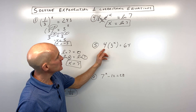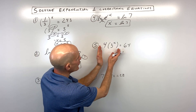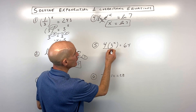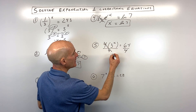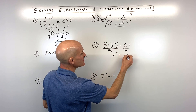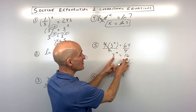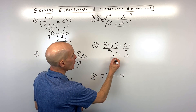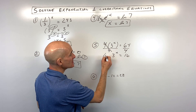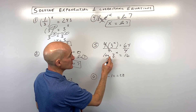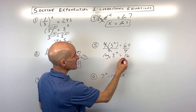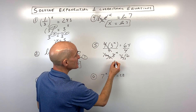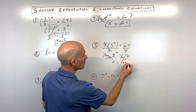For number 5, we want to work from the outside in towards the variable x. Instead of multiplying by 4, let's divide both sides by 4, and now we have 3 to the x equals 16. We can't get the bases the same here, so we take the logarithm — the opposite of exponentiating. I'm going to take log base 3 of both sides to keep it balanced. These are inverses, so we have x equals log base 3 of 16. This is an exact answer.